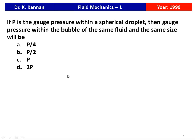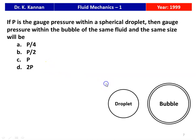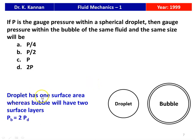Next question from the 1999 question paper: if P is the gauge pressure within a spherical droplet, then the gauge pressure within a bubble of the same fluid and same size will be — P/4, P/2, P, or 2P. A droplet has one surface layer whereas a bubble has two surface layers, so the pressure of the bubble equals two times the pressure of the droplet. The answer is 2P.